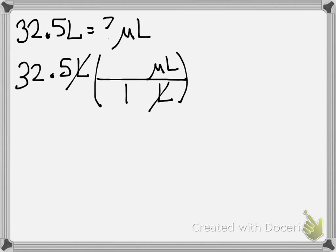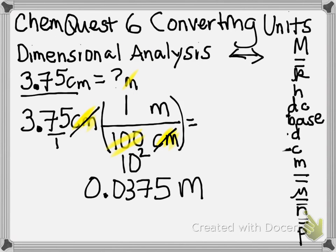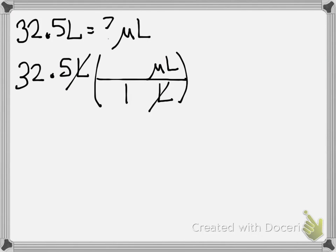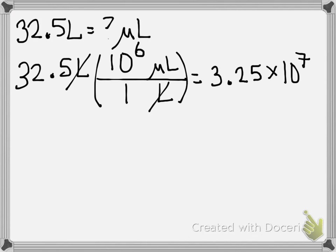Our liter is larger because that's the base. Here's our base, and here's our microliter. So we're going to move 1, 2, 3, 4, 5, 6 — this is probably one that is easier to write as 10 to the 6th. Which means our answer is 3.25 times 10 to the 7th microliters.